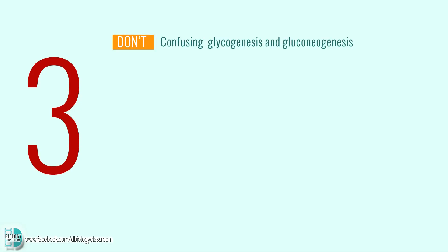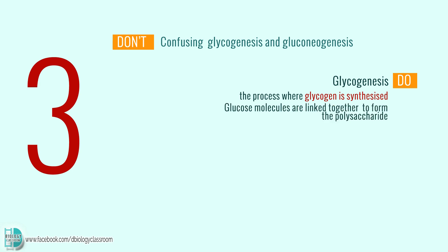Number 3: Confusing glycogenesis and gluconeogenesis. Glycogenesis is the process where glycogen is synthesized. Glucose molecules are linked together in this process to form the polysaccharide. It is stimulated by the hormone insulin.